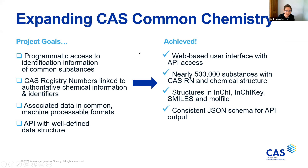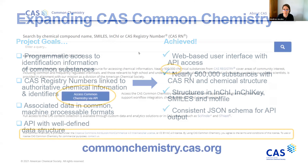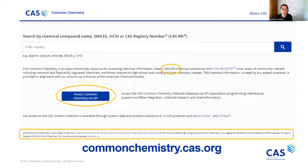I'll walk through a few details of the resource as well as some particular successes of this project. What you're seeing on the screen now is a screenshot from the main CAS Common Chemistry home page. There's a search box as well as the ability to gain access to the same content via the API. The resource now covers nearly 500,000 substances and is provided under a Creative Commons license.